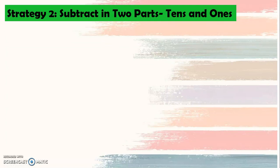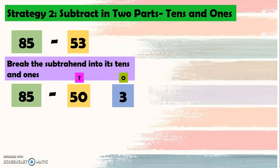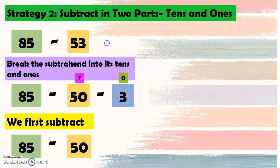So we will have strategy two: subtract in two parts, but this time with tens and ones. So 85 minus 53. Now let's break the subtraction into its tens and ones. So 85 minus 50, which is in the tens, and minus 3, which is in the ones. So 85 minus 50 minus 3, then we first subtract 85 minus 50 equals 35.